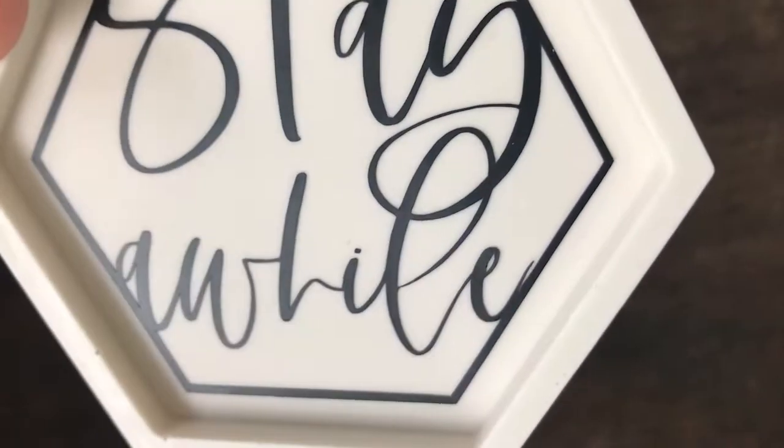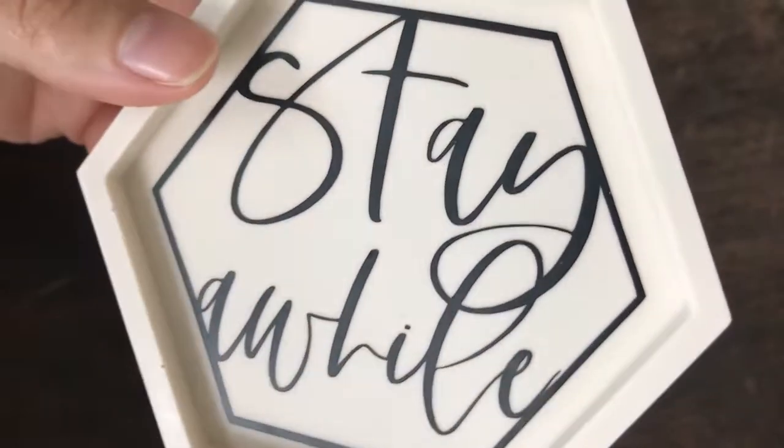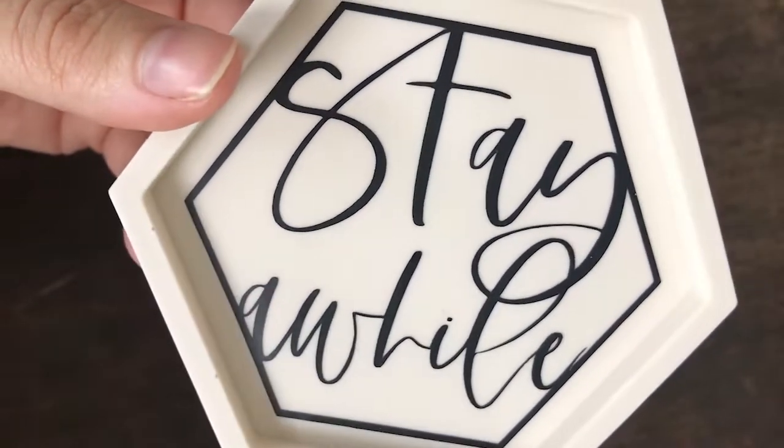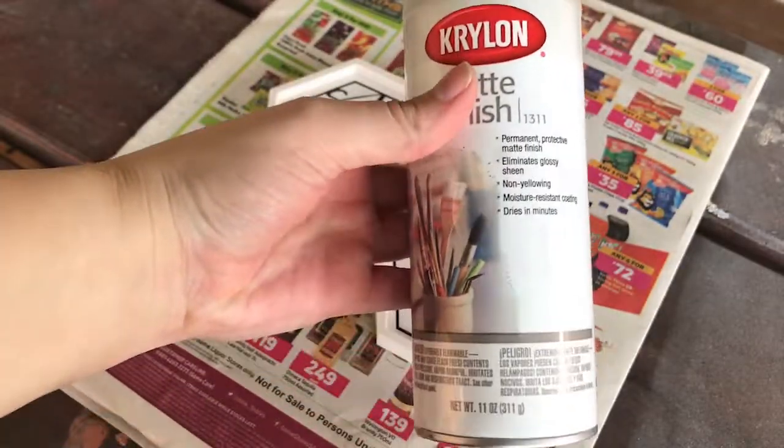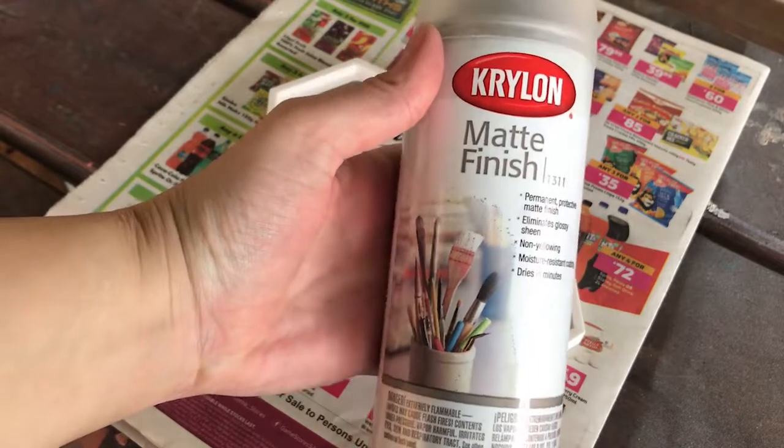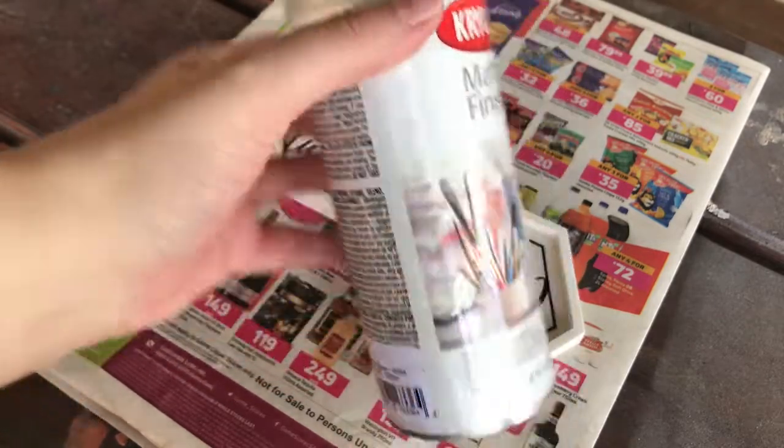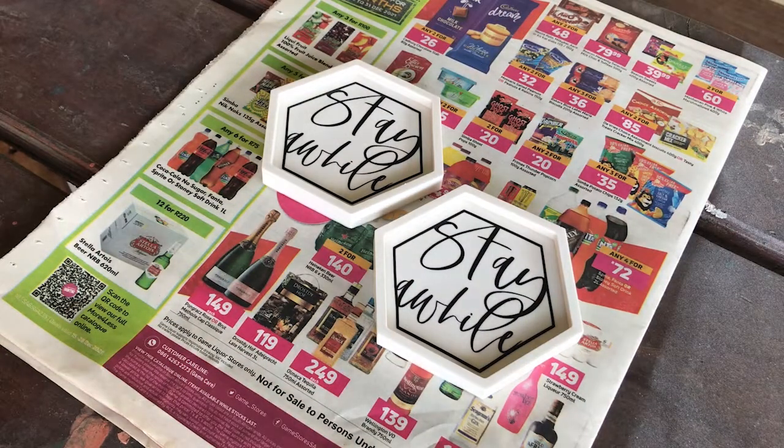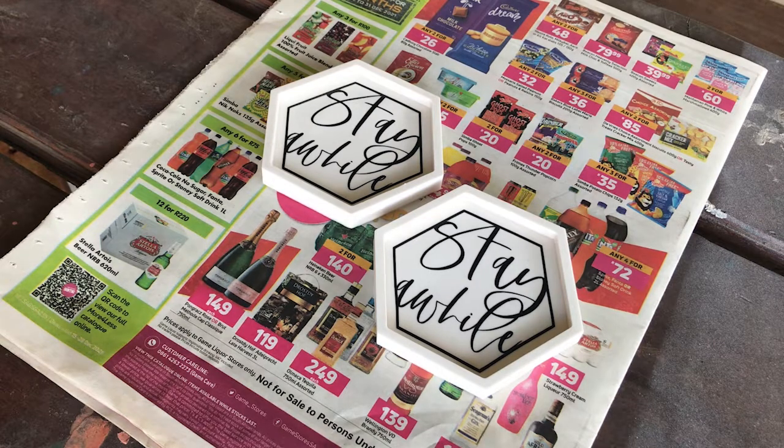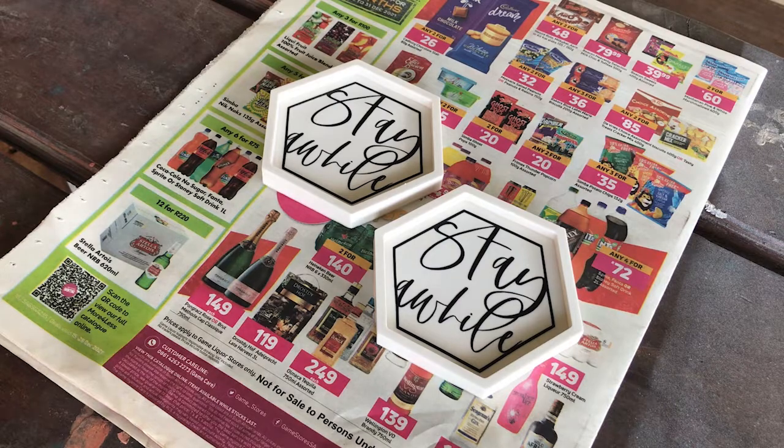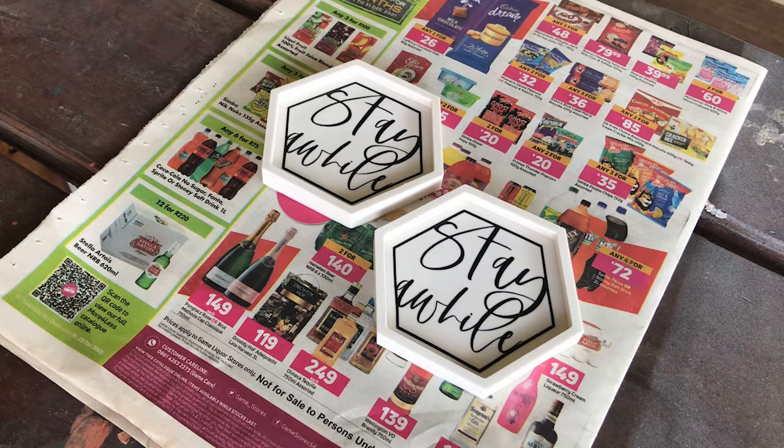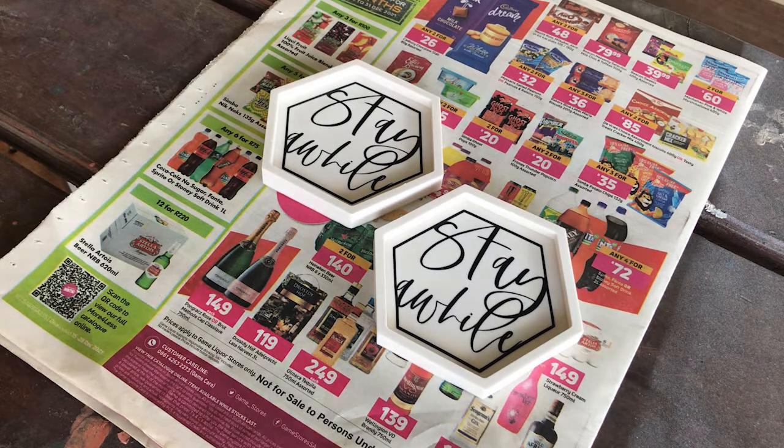So I've managed to get the decal on there and oh my gosh it looks so pretty. Okay now we're ready to seal our piece. So for this step I went outside because I'll be using Krylon matte spray finish to seal my coasters. I typically do about two to four coats of the spray and let it dry for about 10 minutes between coats. I also like to hold my spray at about 30 centimeters, that's about 12 inches away from my pieces to avoid blotching.